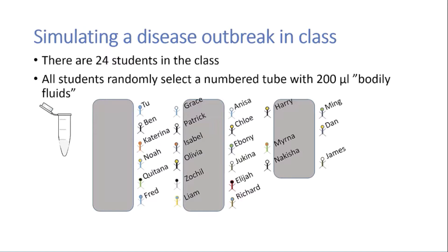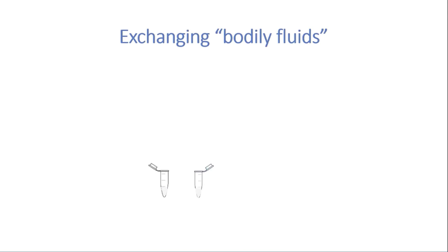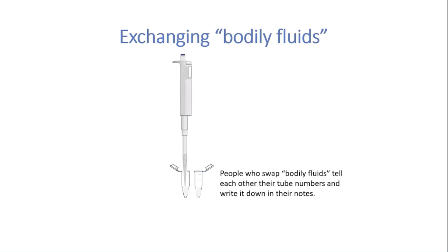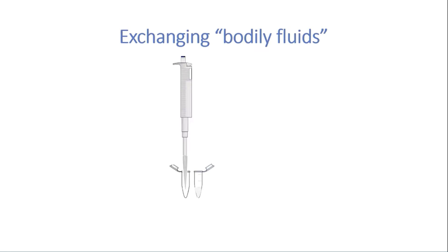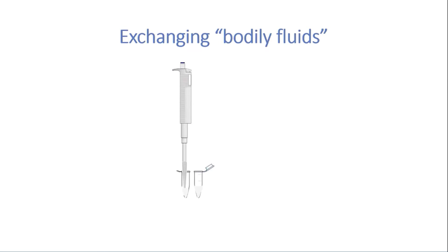Students will then exchange bodily fluids with each other by mixing the fluid in the tubes. Two students will meet up. One student will use a 200 microliter pipette to transfer all their bodily fluids into their partner's tube. The fluids are mixed by pipetting up and down a few times, and then 200 microliters is transferred back to the original student's tube. The two tubes are held up side by side to confirm approximately equal volumes, and then everybody returns to their seat.